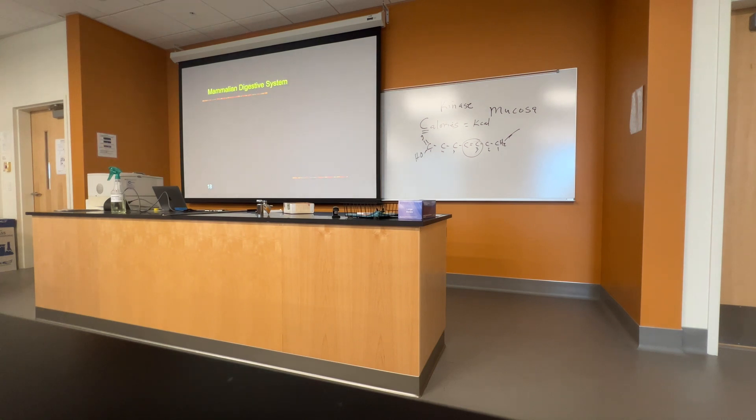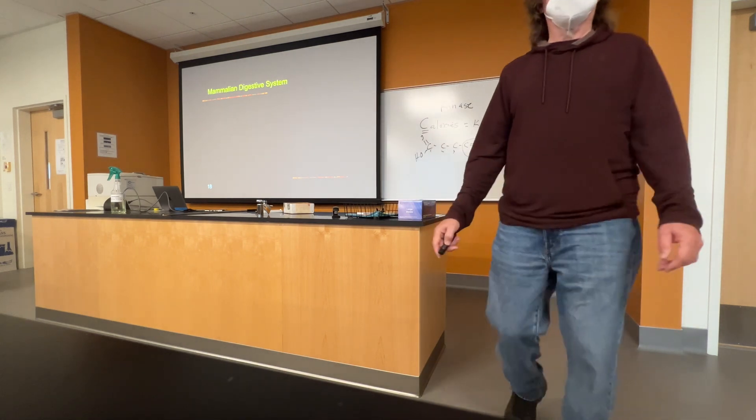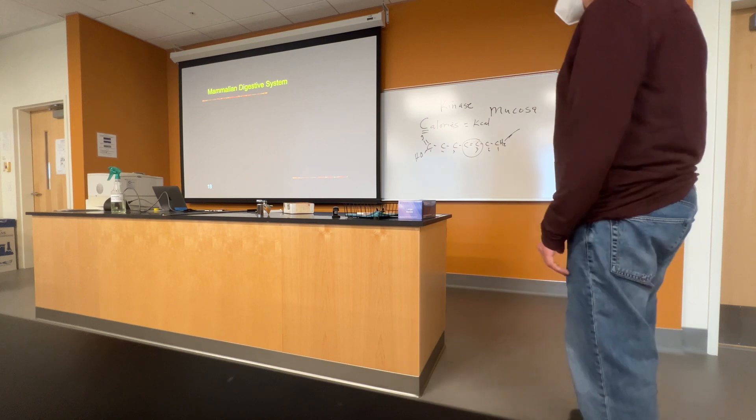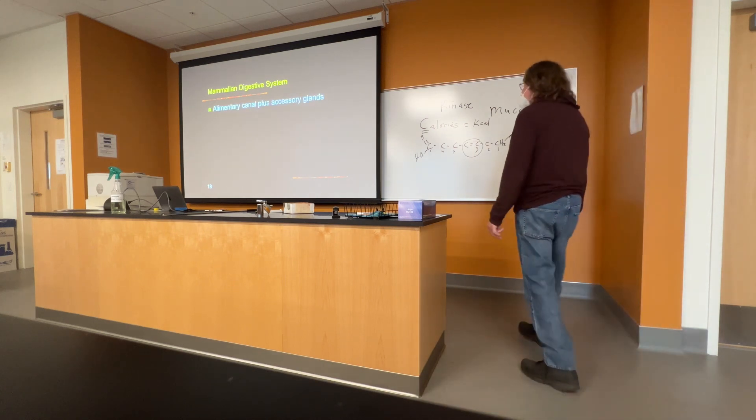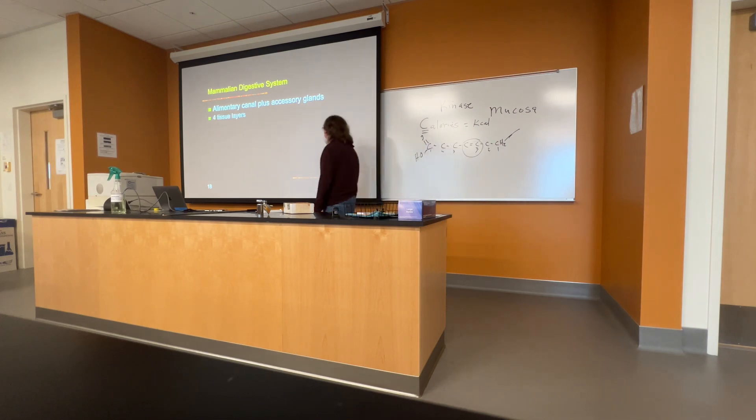All right. So I'm only going to talk about the mammalian digestive system. In the lab, we've looked at the system in shark and frog and later on we'll look at pigs. Very similar. So this is the alimentary canal plus accessory glands. So most of the alimentary canals I mentioned already consist of four tissue layers. Four tissue layers.